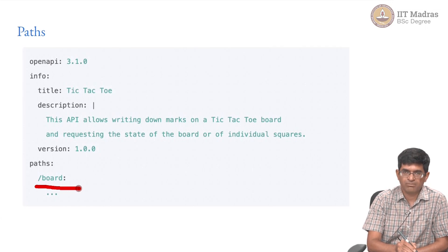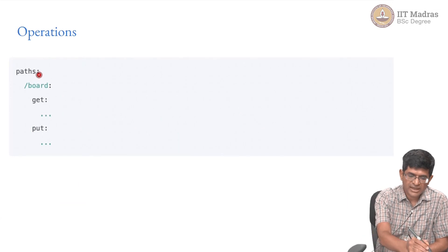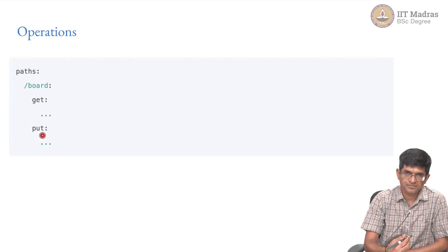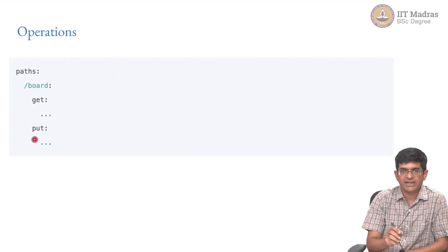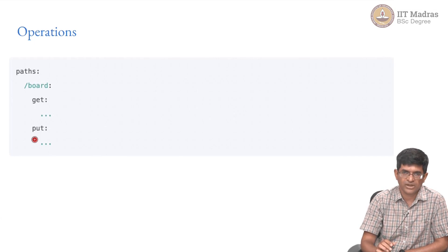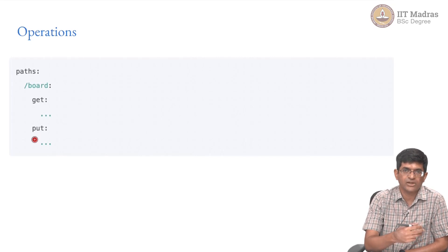What are the kinds of things we could have under /board? I might have a GET which will allow me to retrieve the present state of the board. I might have a PUT which allows me to create a new game, or potentially even a PUT that allows me to create a partially filled game — creating the 9-square grid but also pre-populating it with some values of X's and O's. It all depends on what you are trying to do, but the point is it specifies what kind of functionality can be done.